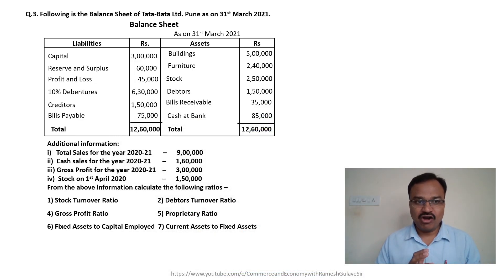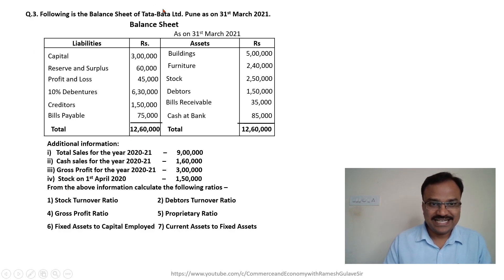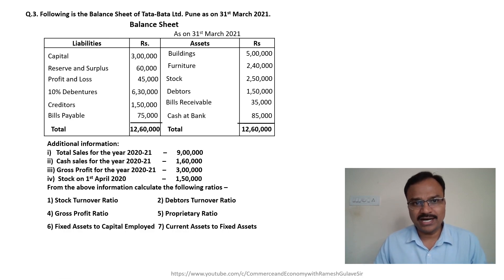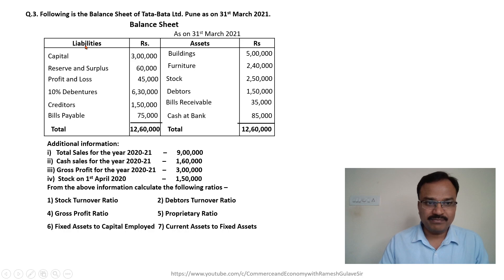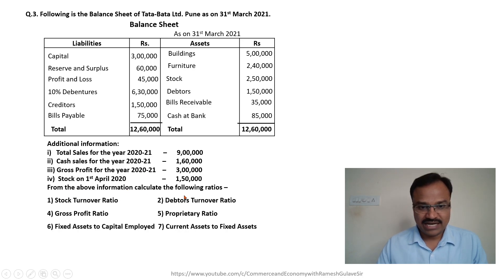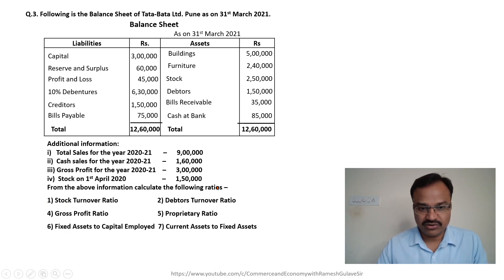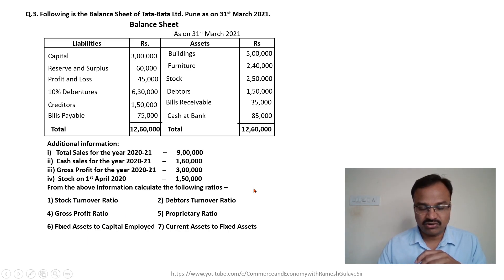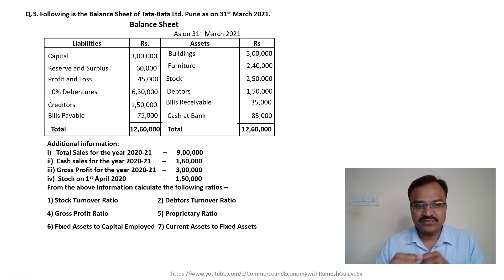Welcome friends, this is the second part on ratio analysis. In this session we are going to solve a question involving specific ratios. The question gives a balance sheet of Tata Bata Limited, Pune, as on 31st March 2021. In this video I am going to mainly focus on stock turnover ratio and debtors turnover ratio, because many students get confused about these ratios and don't know exactly what their importance is.